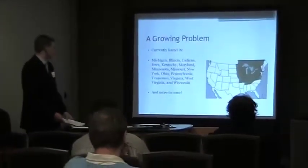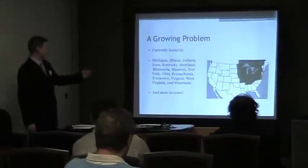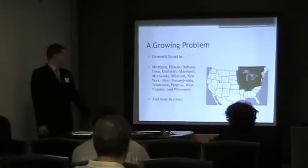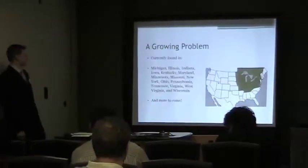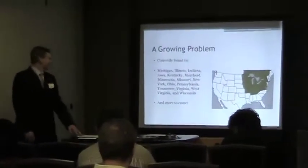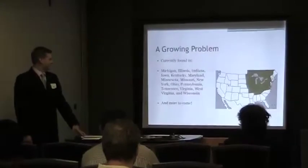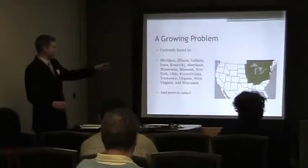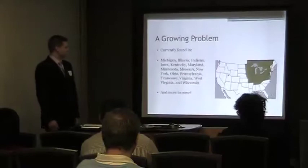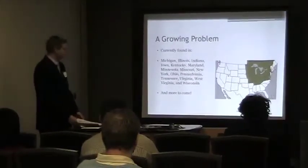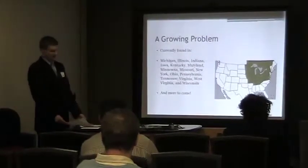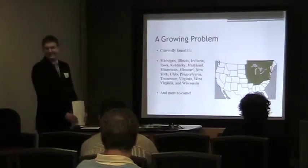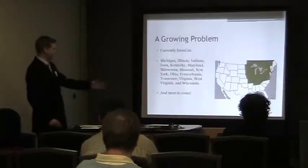Currently, it spread from Michigan to Illinois, Iowa, Kentucky, Maryland, Minnesota, Missouri, New York, Ohio, Pennsylvania, Tennessee, Virginia, West Virginia, and Wisconsin — and many more to come. So in that 10-year time period it spread from the epicenter in Michigan uniformly outward. Although efforts are being made to stop it, we don't know exactly how to.